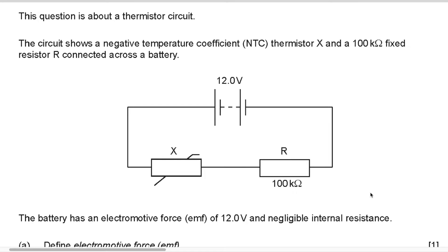Hello everyone. In this video we'll be solving an electricity problem. This problem is for both HL and SL students. The question is about a thermistor circuit. The circuit shows a negative temperature coefficient thermistor X and a 100 kilohm fixed resistor connected across a battery. The battery has an electromotive force of 12 volts and negligible internal resistance.